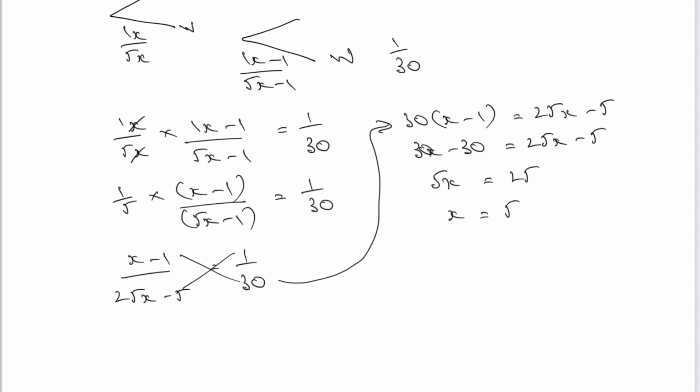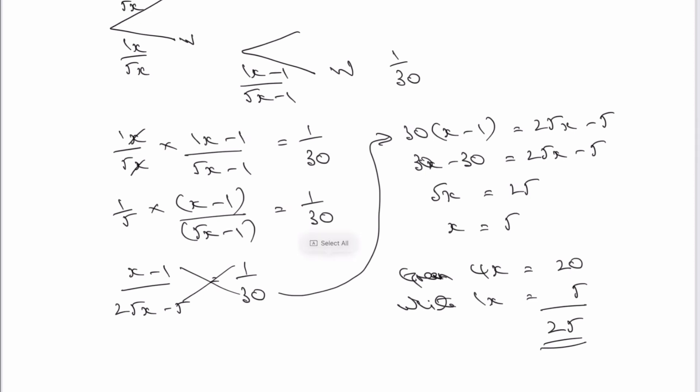OK, and that actually answers the question because I know now that the value of the greens, which I said was going to be a multiple of x, 4 times x, is going to be 4 times 5, which is going to be 20. And the value of the white is going to be 1x, which is going to equal 5. So therefore, there must be 25 counters in the bag at the beginning of this particular process.